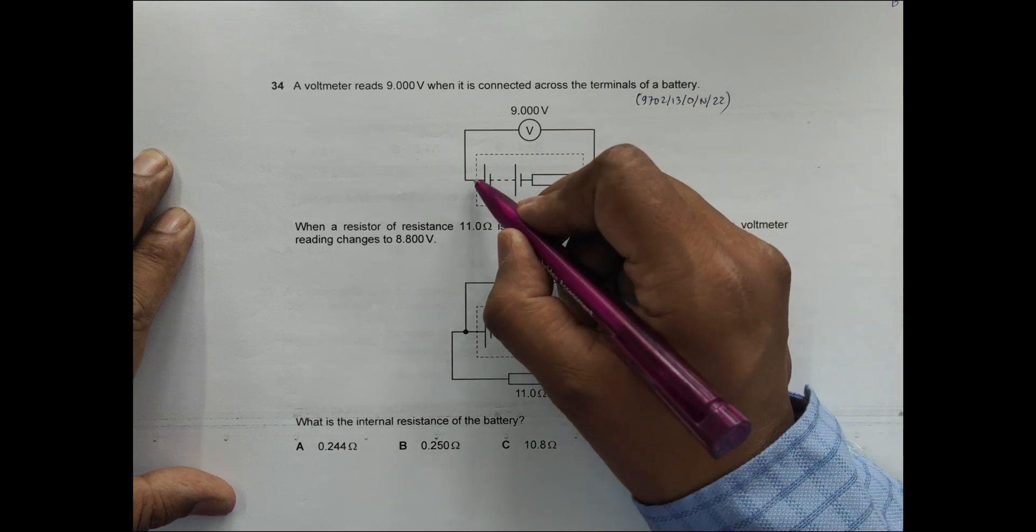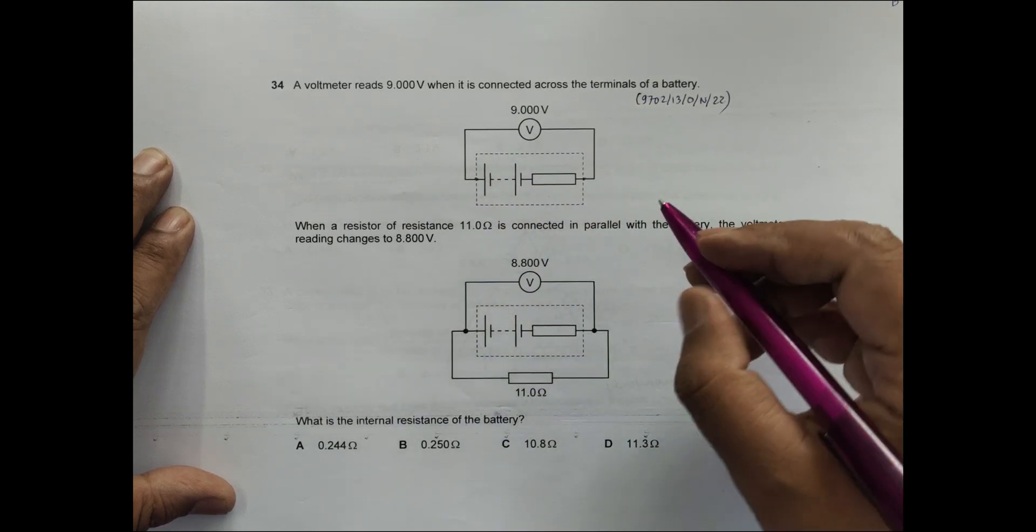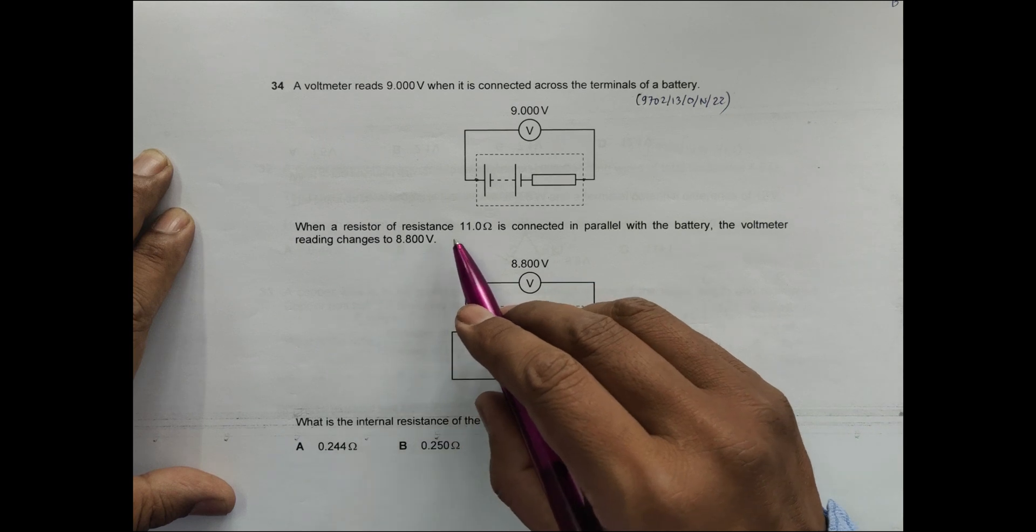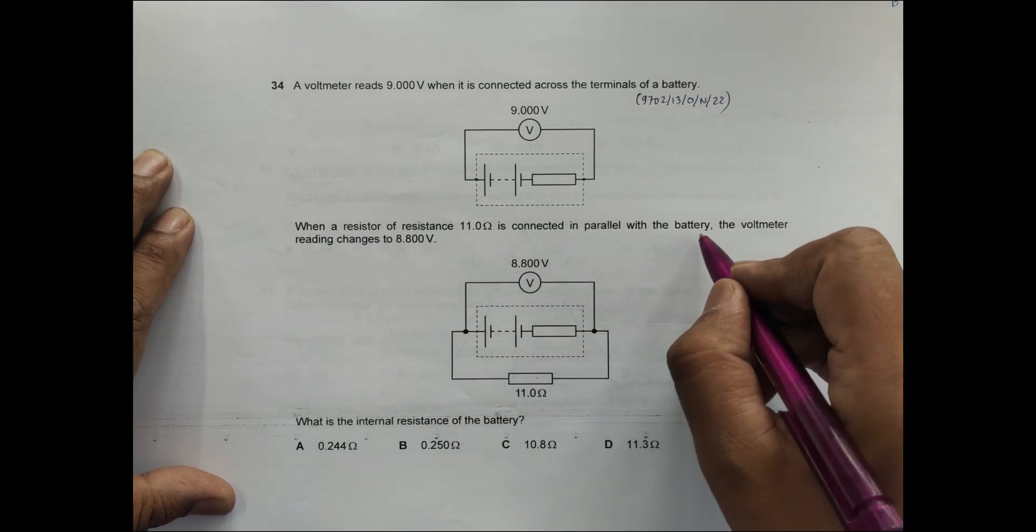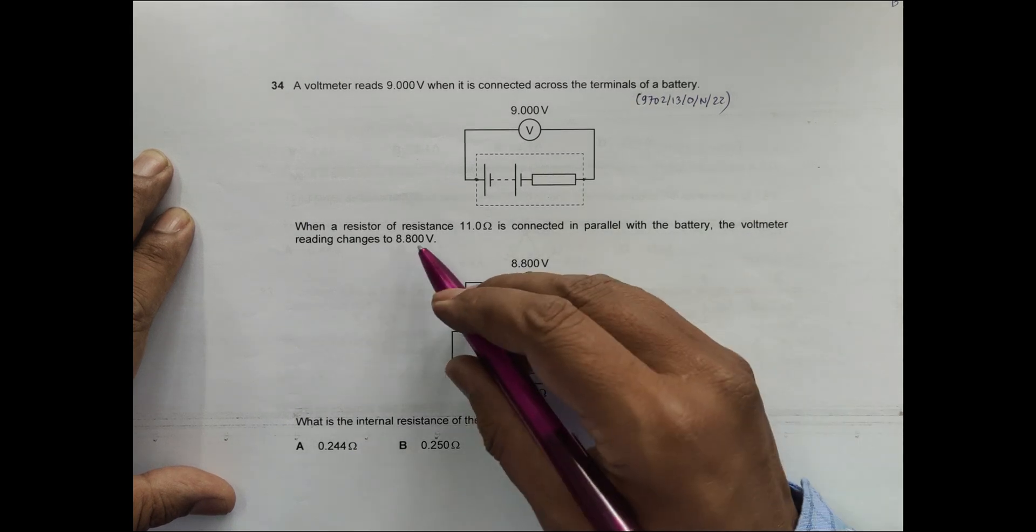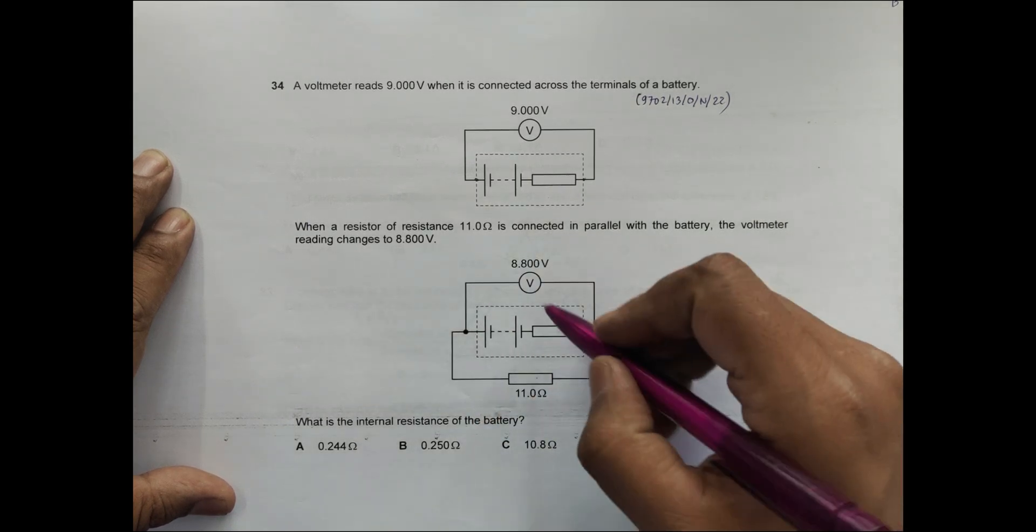When a resistor of resistance 11.0 ohm is connected in parallel to the battery, the voltmeter reading changes to 8.800 volt.